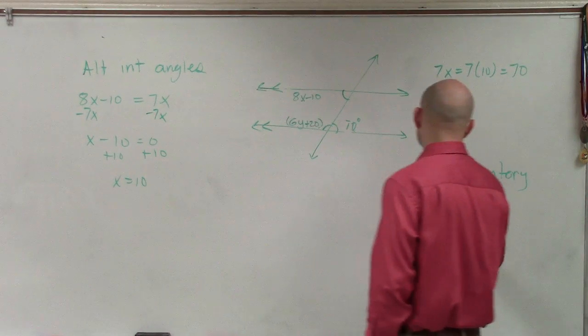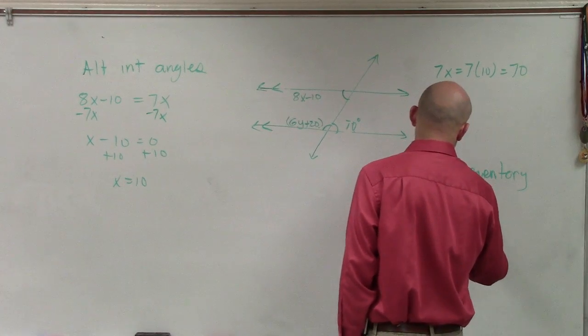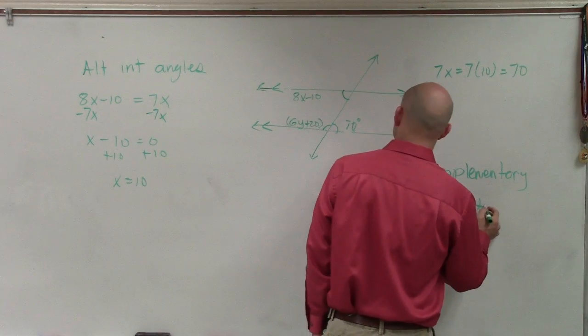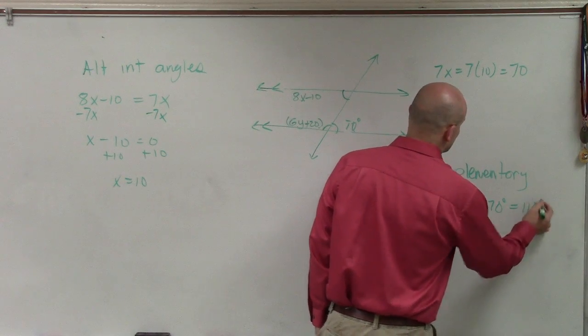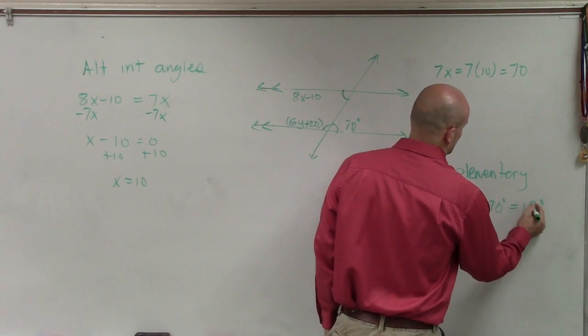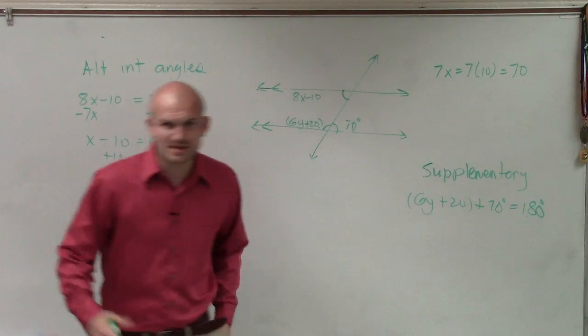So therefore, I'll write down these are supplementary angles. Therefore, I know that the sum of 6y plus 20 plus 70 equals 180 degrees.